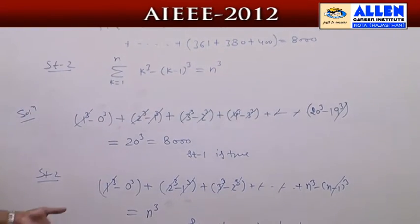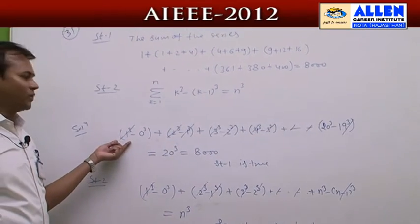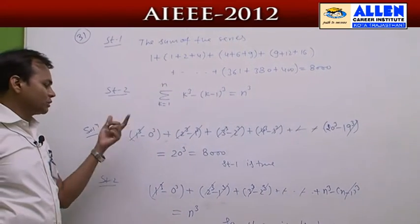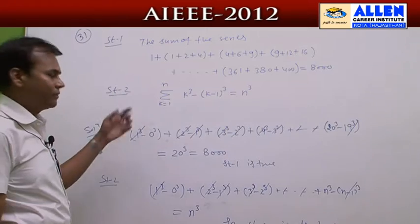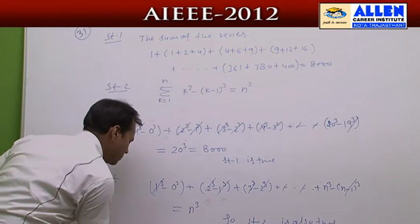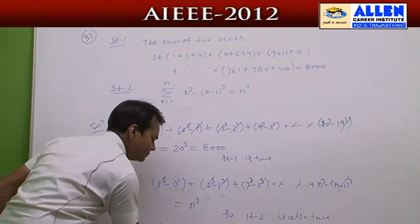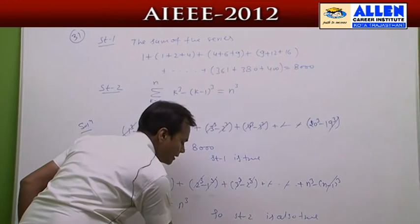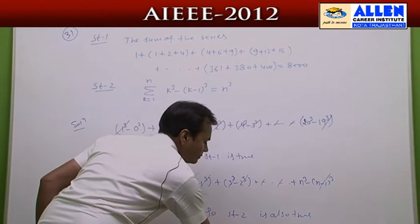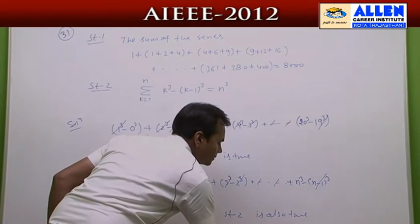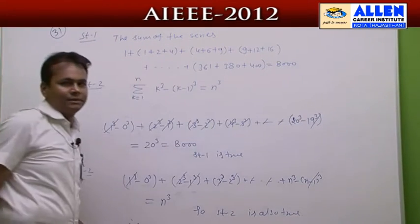We see that with the help of Statement 2, we can prove Statement 1 as well. So Statement 2 is a correct explanation of Statement 1. Therefore the answer is: Statement 2 is a correct explanation of Statement 1.